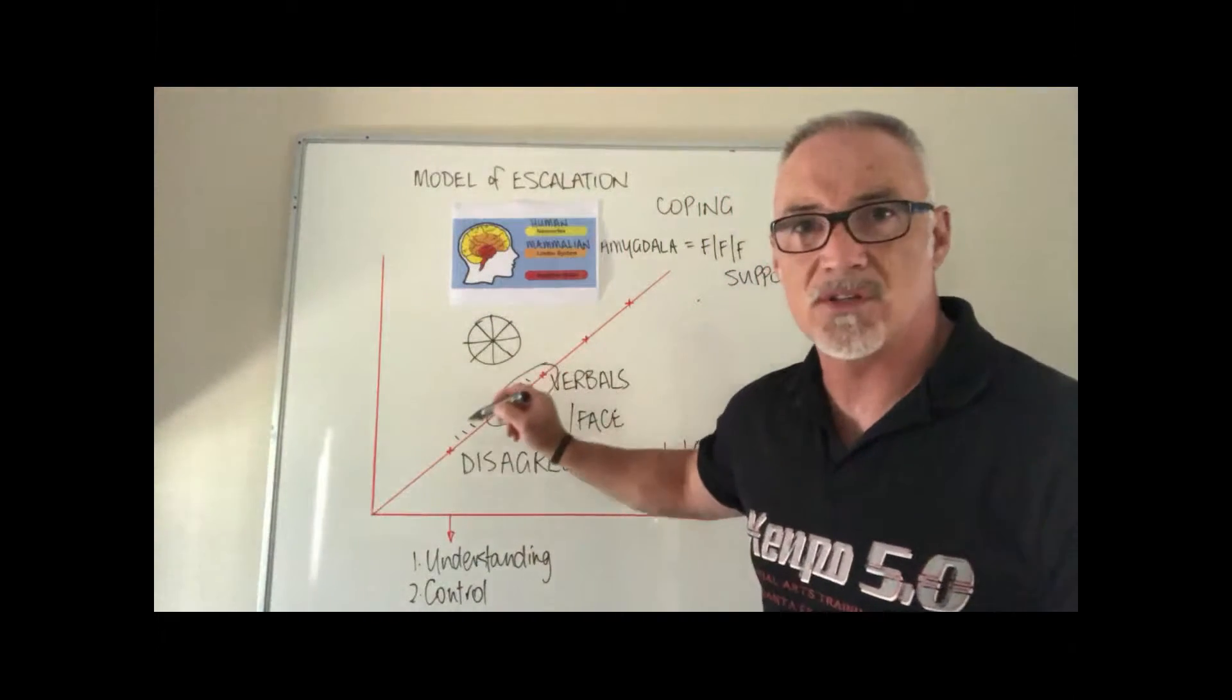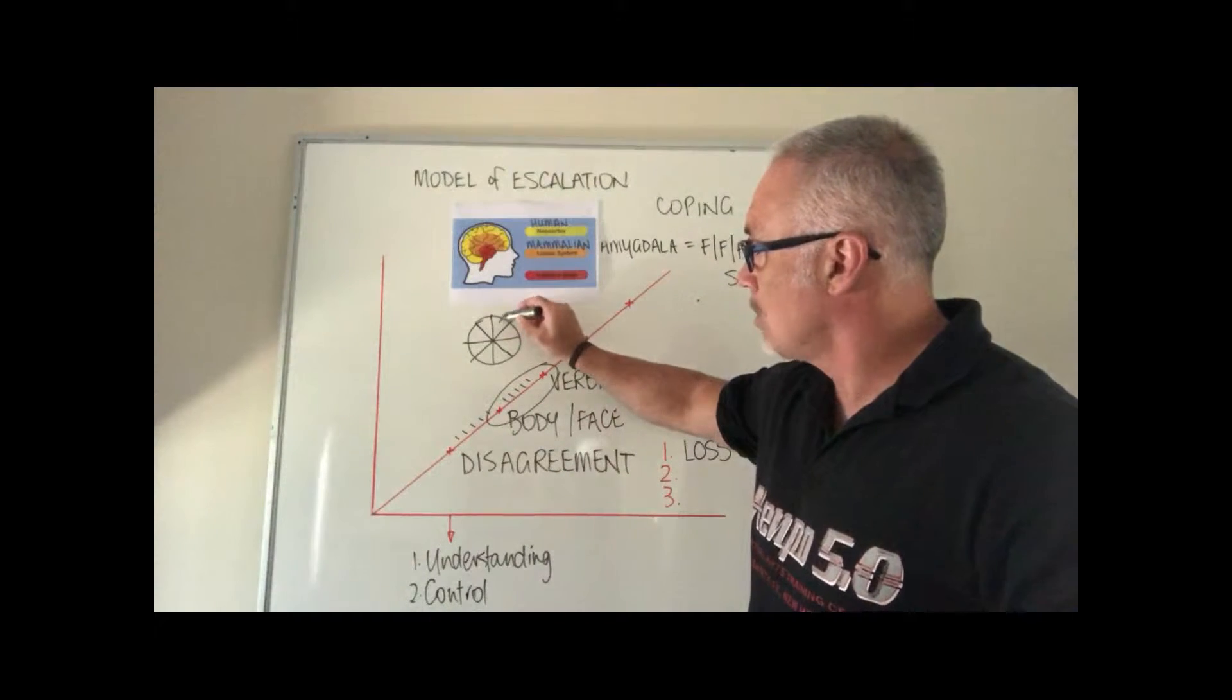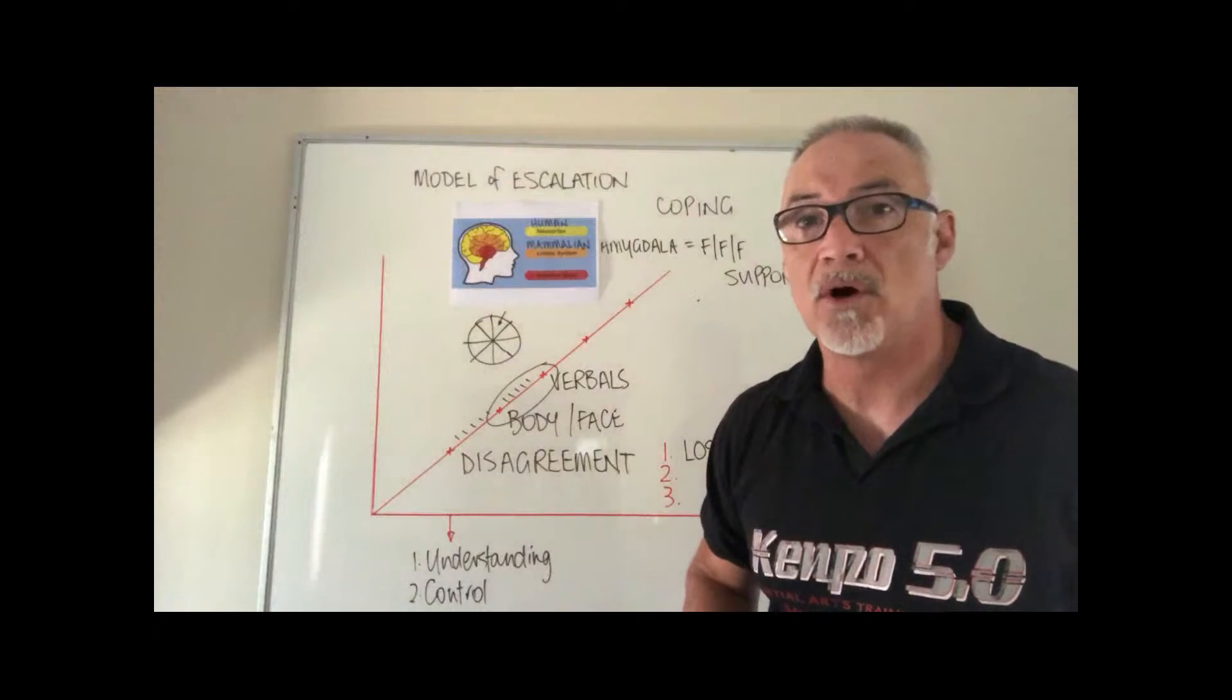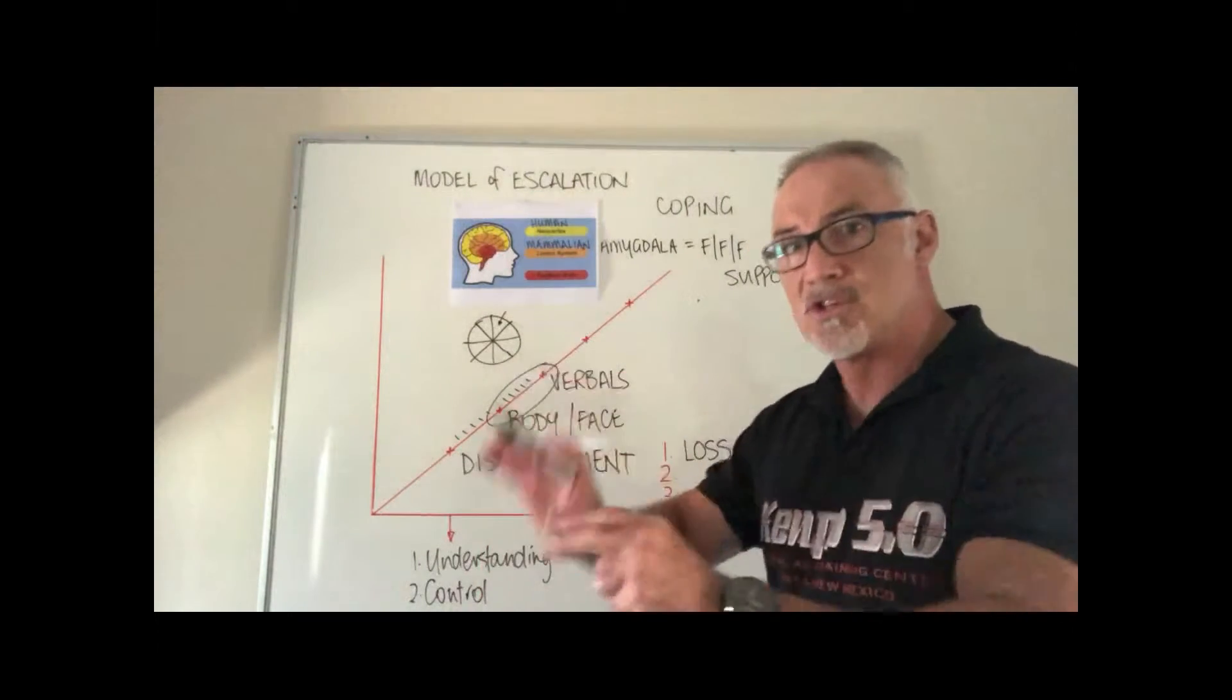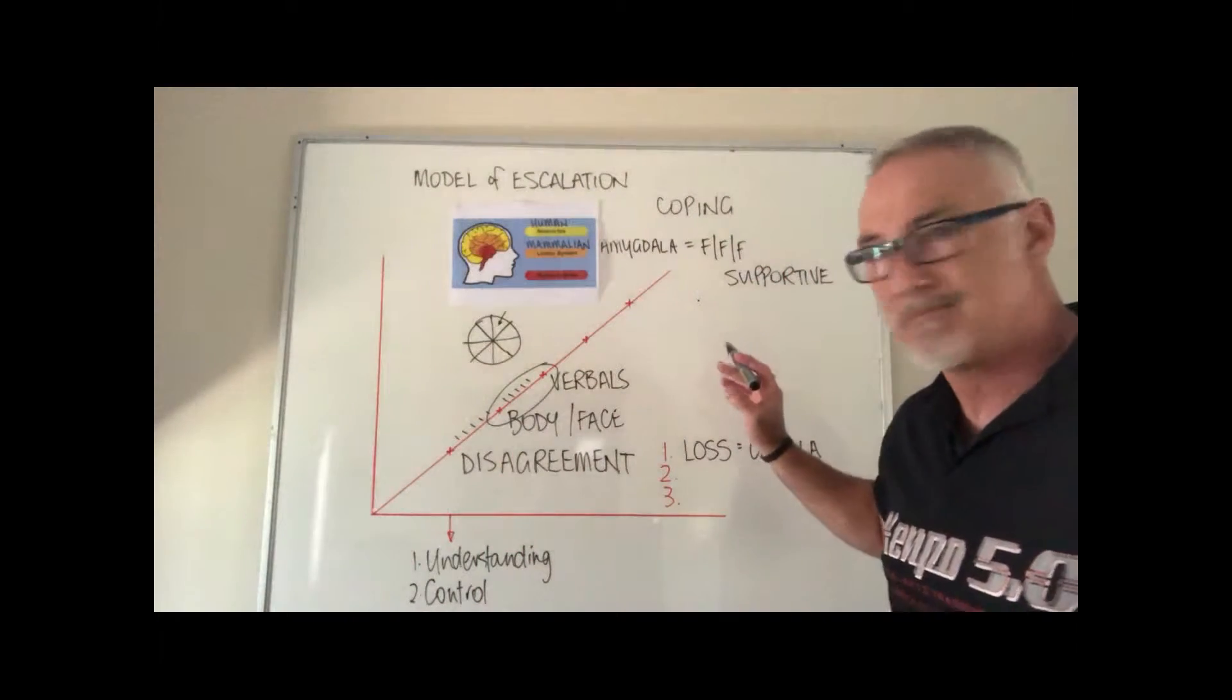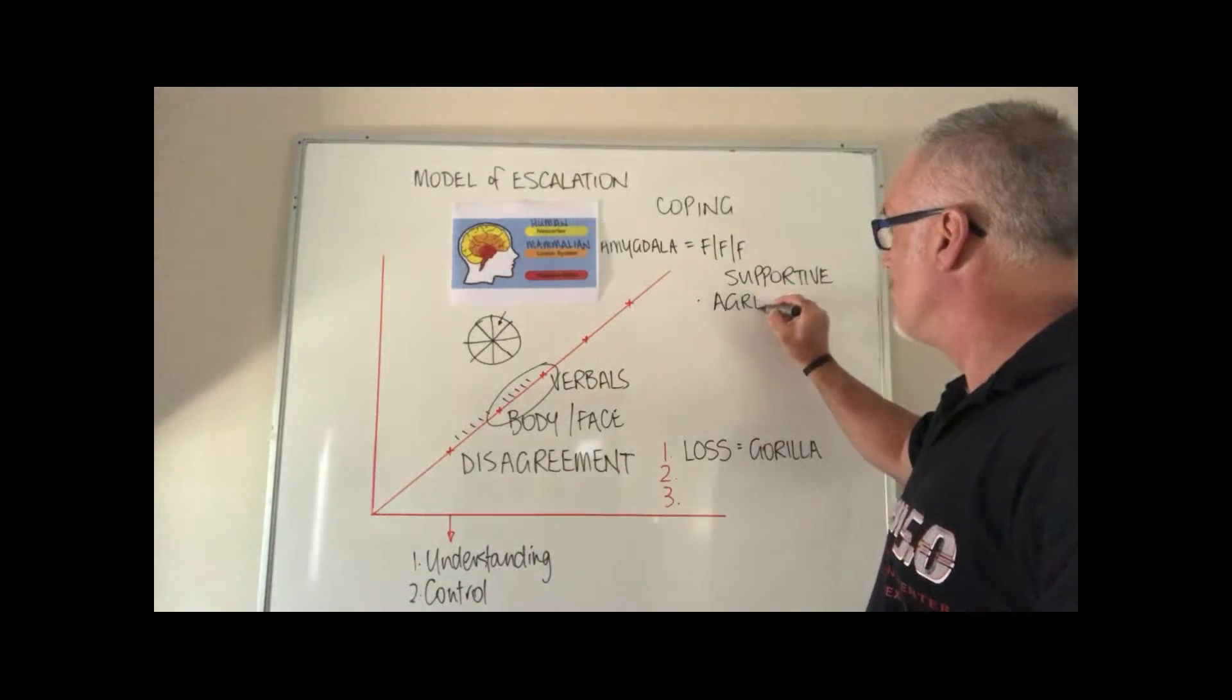We're going to talk about the tactical options model later on and the tactical options model is simply a pie chart that has a number of slices of pie. It's just easy to draw eight. One of those slices of pie would be communicate, but there are other slices of pie that you can choose. So you don't have to communicate.